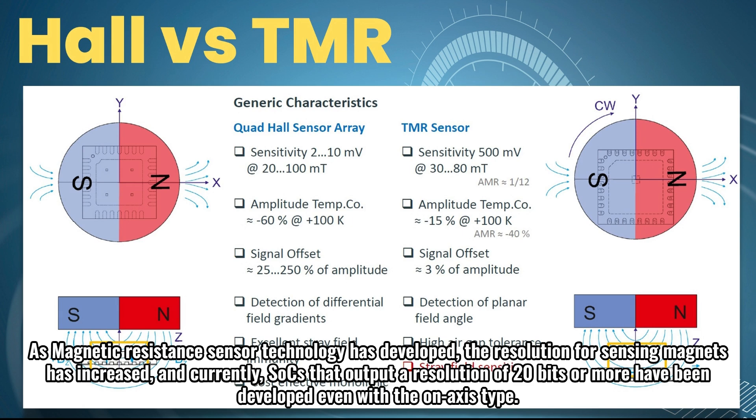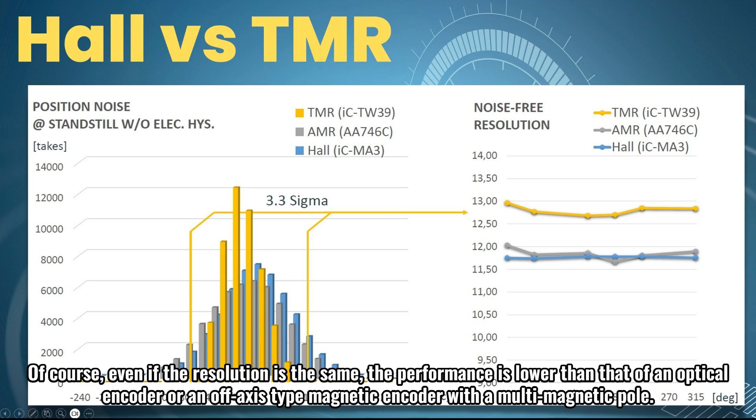And currently, SOCs that output a resolution of 20 bits or more have been developed even with the on-axis type. Of course, even if the resolution is the same, the performance is lower than that of an optical encoder or an off-axis type magnetic encoder with a multi-magnetic pole.